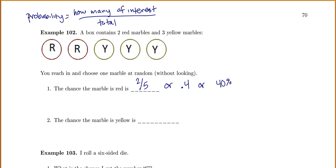The chance that the marble is yellow would be three out of five, found by counting how many yellows there are.